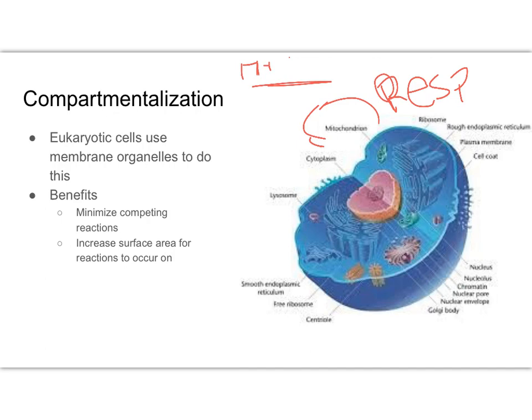The chloroplast — we don't have one in this picture since it's an animal cell — would compartmentalize photosynthesis. During photosynthesis, we also need to create gradients, and to do that you need enclosed areas. So the chloroplast conducts photosynthesis in a compartmentalized manner.